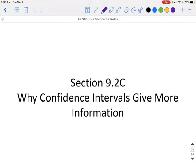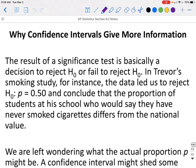This is Section 9.2 Part C: Why Confidence Intervals Give More Information. The result of a significance test is basically a decision to reject the null hypothesis or fail to reject the null hypothesis. In Trevor's smoking study, for instance,